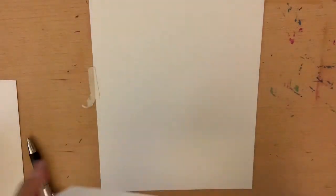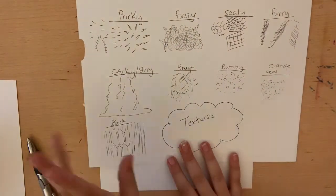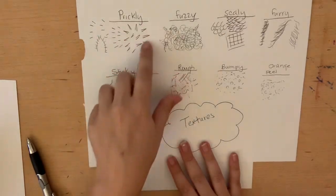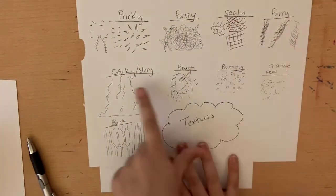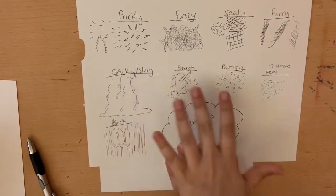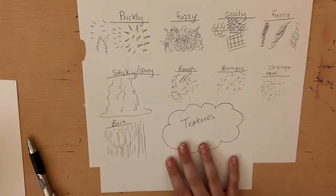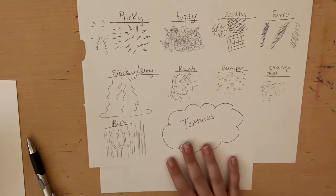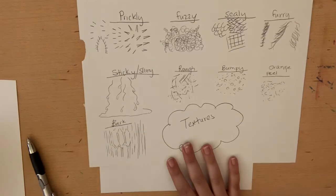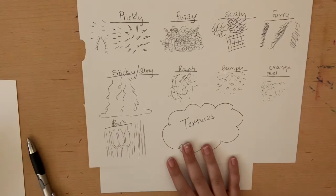So I've written some adjectives, like some describing words. So we have something that's prickly, something that's fuzzy, scaly, furry, sticky, slimy, rough, bumpy. I made an orange peel because orange peels were kind of different. They're like not quite in there. And I have like bark from wood, like wood from a tree.